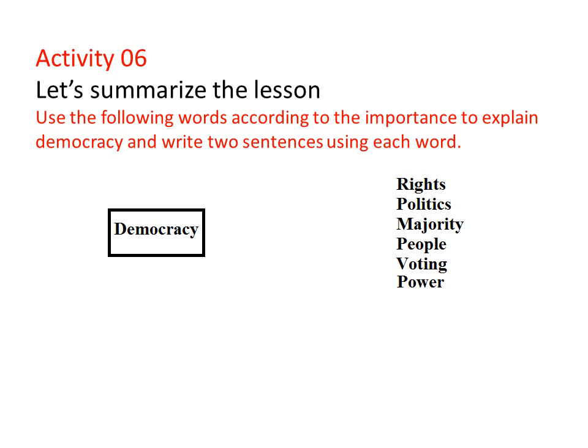The last activity is to summarize the lesson. There are six words that we can use to explain democracy: rights, politics, majority, people, voting, power. Arrange them according to their importance, then write two sentences using the selected words, so you can explain democracy in a meaningful way. Hope you enjoyed today's lesson. Thank you very much.